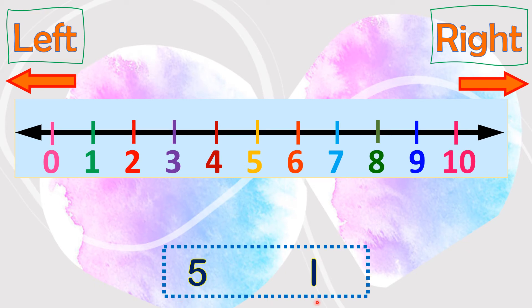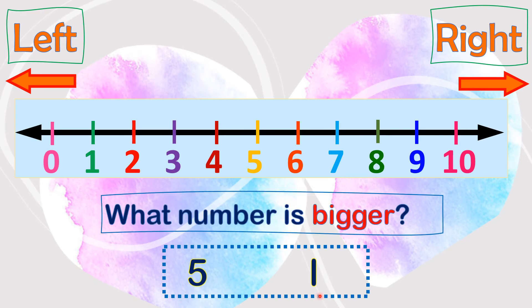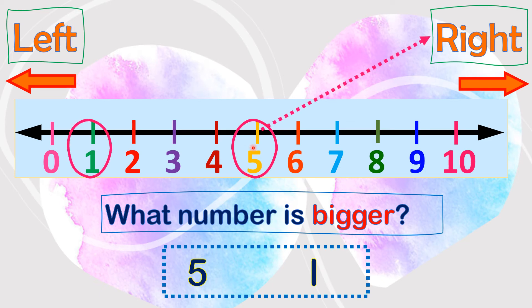We have 5 and 1. What number is bigger? Let us circle 5 and 1. As you can see, 5 is at the right side and 1 is at the left side. We say that numbers at the right side are bigger. Therefore, 5 is the bigger number.